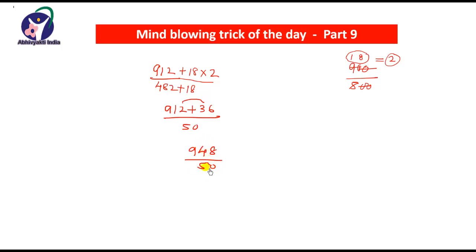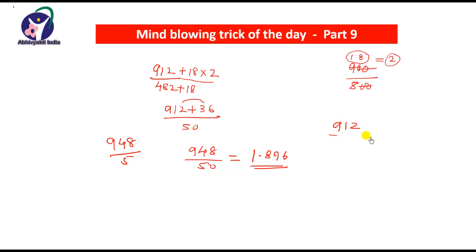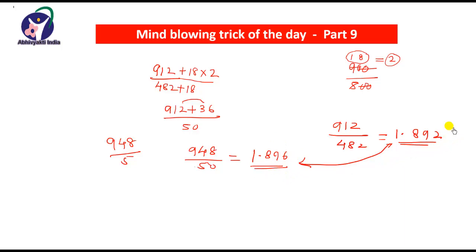To divide 948 by 50, divide 948 by 5 and put a decimal point after one digit. So 948 divided by 50 gives 1.896. And if we divide 912 by 482 using a calculator, we get 1.892. Both numbers are very close, so the approximation is very very close to the actual answer, and you can calculate it within seconds by this method.